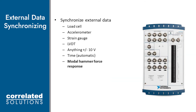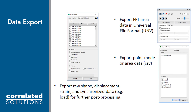So what else can we do with all of this data? The first thing we want to do is pair it with other data from external sensors. Using a BNC connection with a plus or minus 10 volt signal, we can synchronize our images with LDVs, strain gauges, modal hammers, and so on. We can then either import this data into VIC-3D, or we can export the time domain data and frequency domain data from VIC-3D into another program.